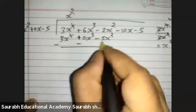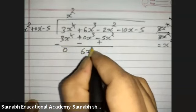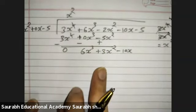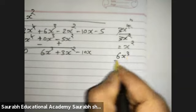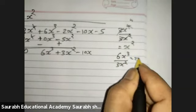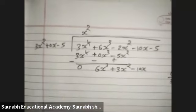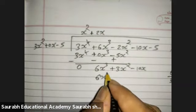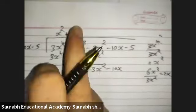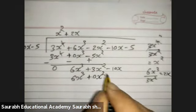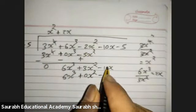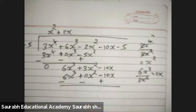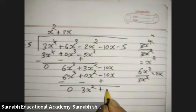Subtracting (minus minus becomes plus), we get 6x³ + 3x² - 10x. Next, 6x³ divided by 3x² gives 2x. Multiply 2x into 3x² gives 6x³, into 0x gives 0x², and into -5 gives -10x. Subtracting, the remainder is 3x² + 0x - 5.